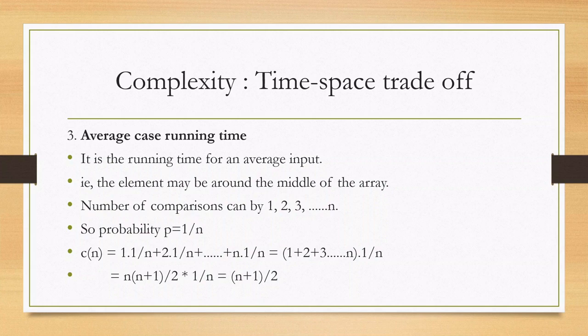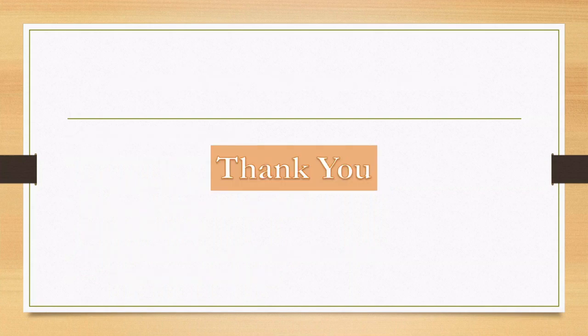So we have three cases: worst case running time, average case running time, and best case running time. The complexity of an algorithm is measured using two terms — space and time. A good algorithm will take less time and less space; that is an efficient algorithm. Thank you.